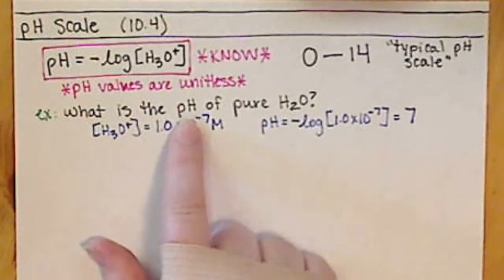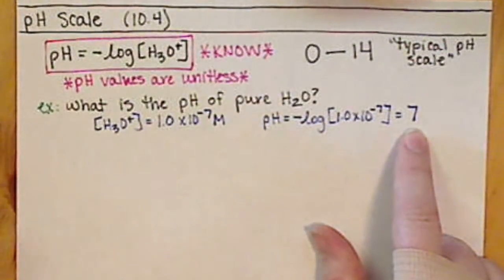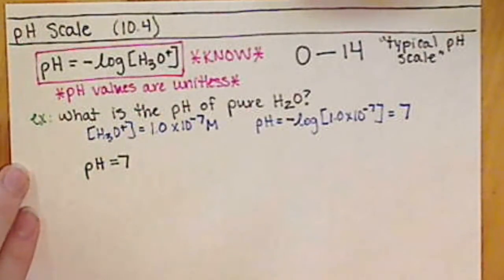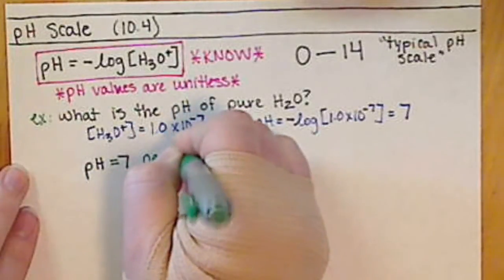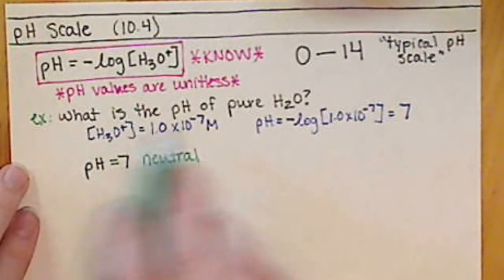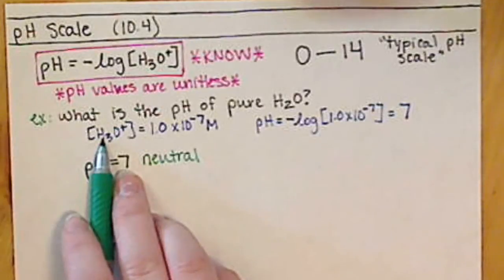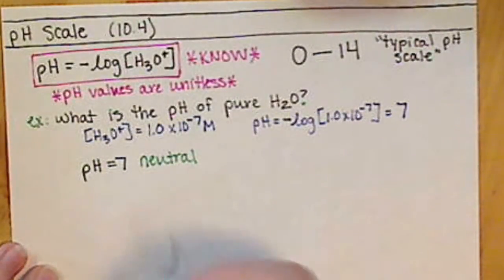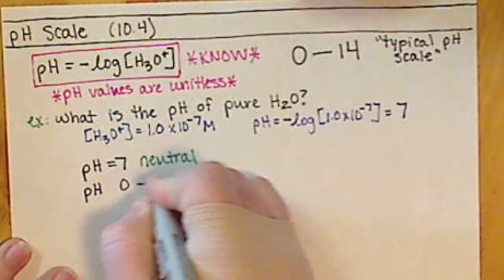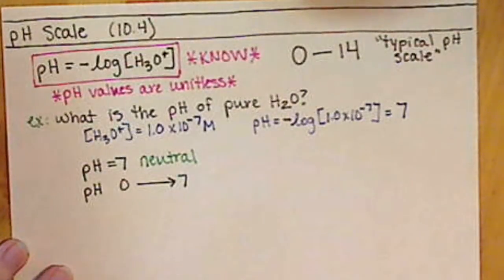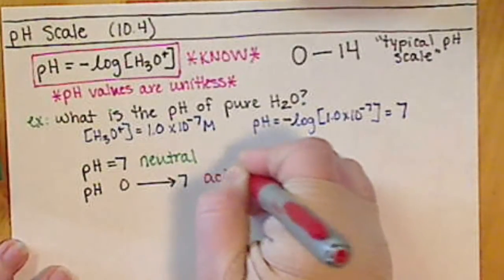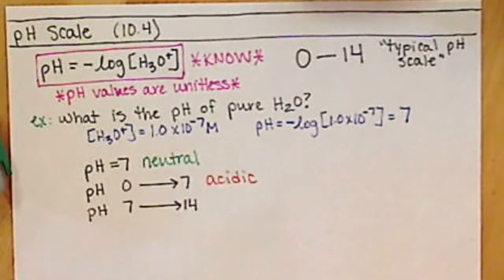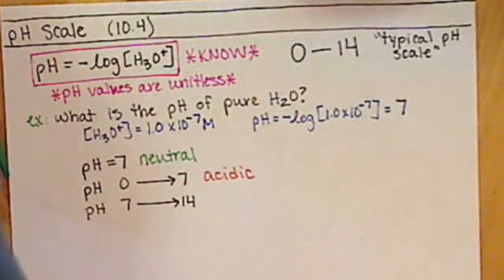If we know that the pH of pure water is 7, and we know that pure water is neutral, that tells us a pH equal to 7 is a neutral solution. If the concentration of H₃O⁺ increases, meaning our solution becomes acidic, the pH value is actually going to get smaller than 7. So a pH from 0 up to but not including 7 is an acidic solution, and a pH greater than 7 up to 14, not including 7, is a basic solution.